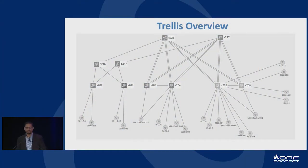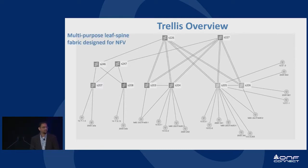Our next speaker is Sarav Das, a distinguished engineer at ONF who's been primarily driving the Trellis work. I'm going to talk about the next generation of Trellis, which is built on top of ONOS. A quick introduction: Trellis is a leaf-spine fabric — I like to call it a multi-purpose leaf-spine fabric. It's designed for NFV. These large operators typically have head ends or central offices that are bigger, and then regional central offices or secondary head ends that are closer to the end user.